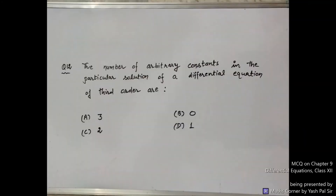Next, question number 12: The number of arbitrary constants in the particular solution of a differential equation of third order. Option A: 3 arbitrary constants. Option B: 0 arbitrary constants. Option C: 2 arbitrary constants. Option D: 1 arbitrary constant.